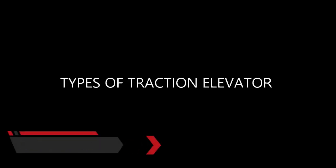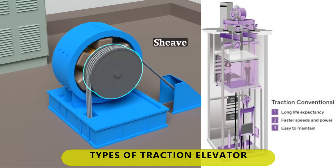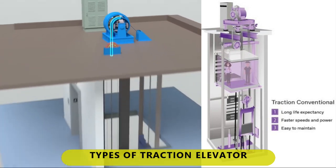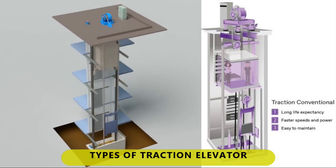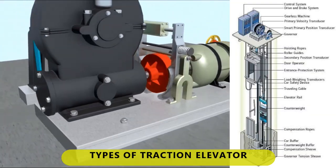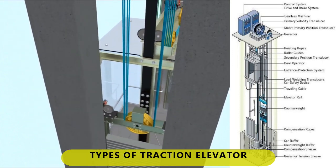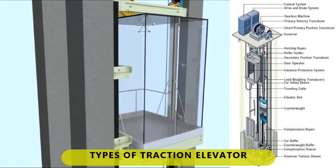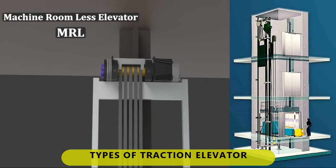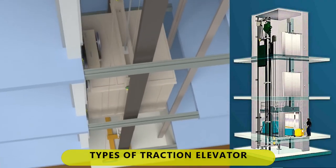Types of traction elevator. 1. Geared — has a gearbox attached to the motor drive that is able to run the elevator with speed up to 2.50 meters per second. 2. Gearless — wheels are directly attached to the motor drive that is able to run the elevator with speed up to 10.0 meters per second. 3. Machine room-less — has no machine room above the elevator shaft.